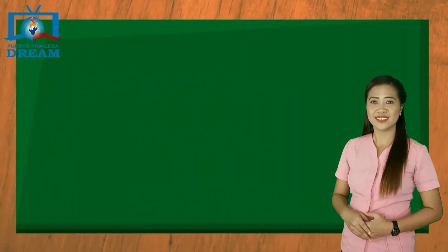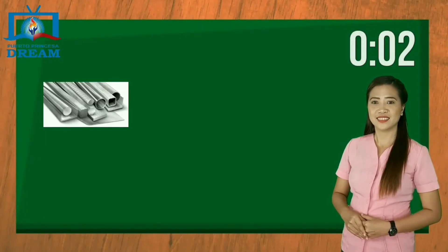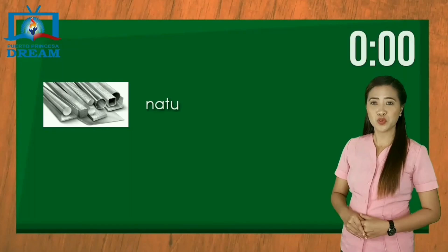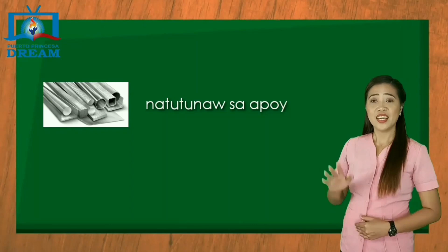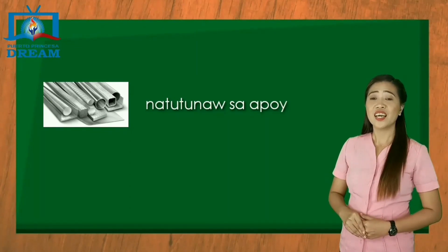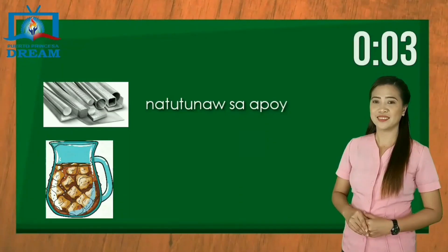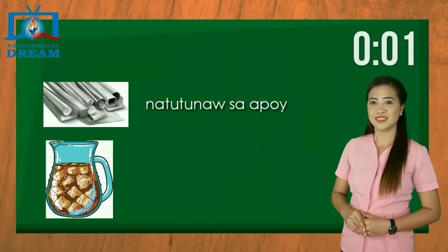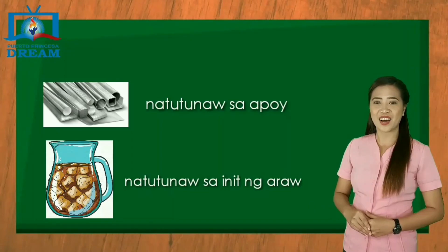Ikaapat — Bakal: natutunaw sa apoy. Ikalima — Yelo sa loob ng pitsel: natutunaw sa init ng araw.